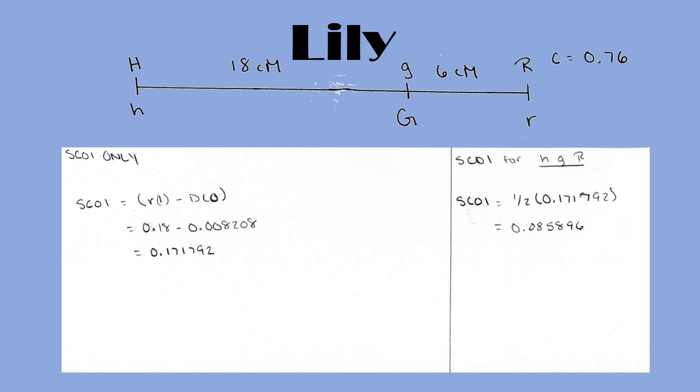we take our region 1 recombination frequency and subtract the double crossover frequency. So we have 0.18 minus 0.008208, which equals 0.171792.